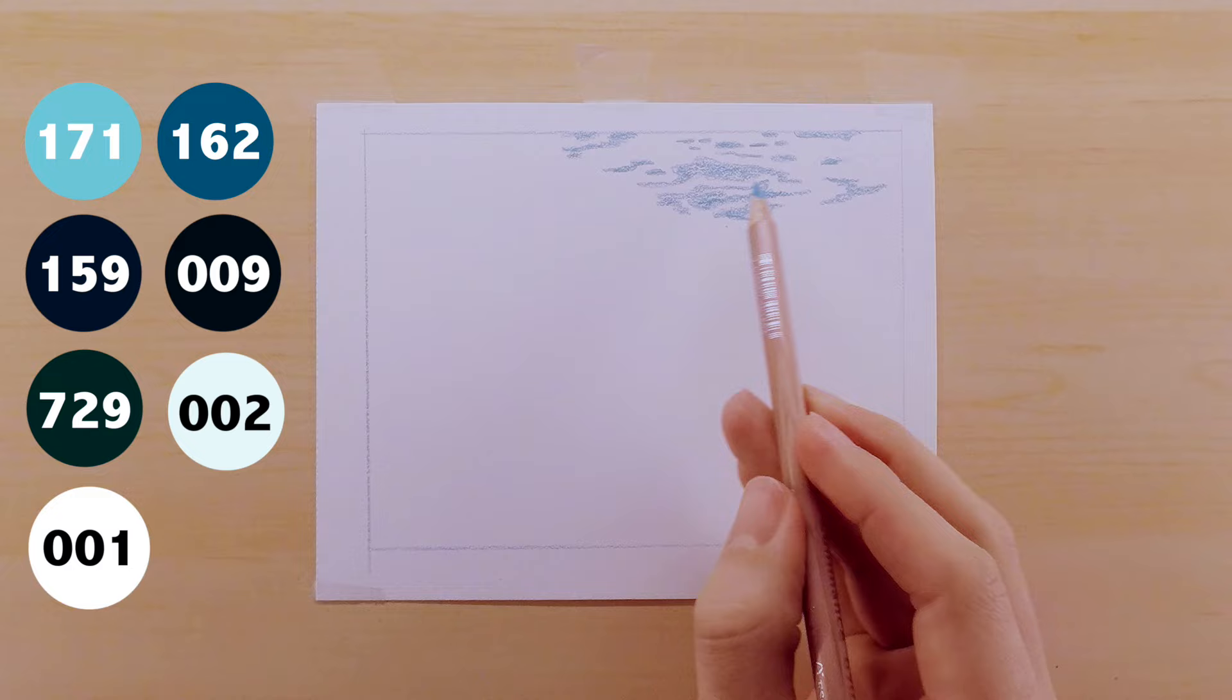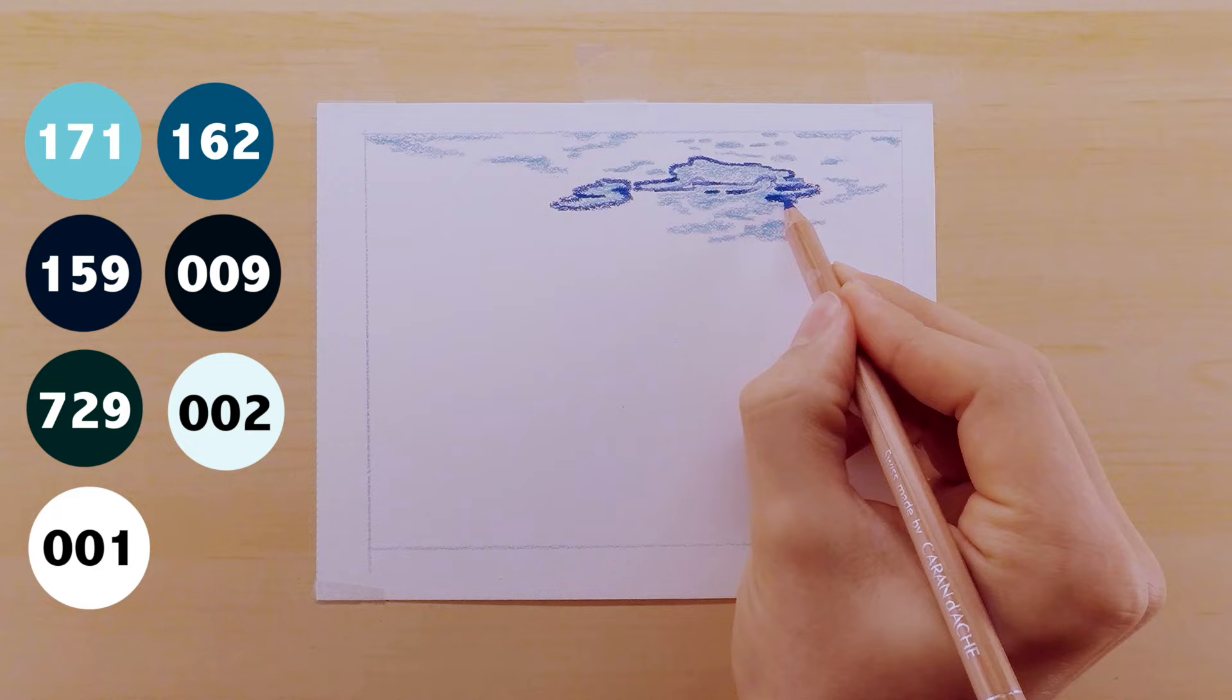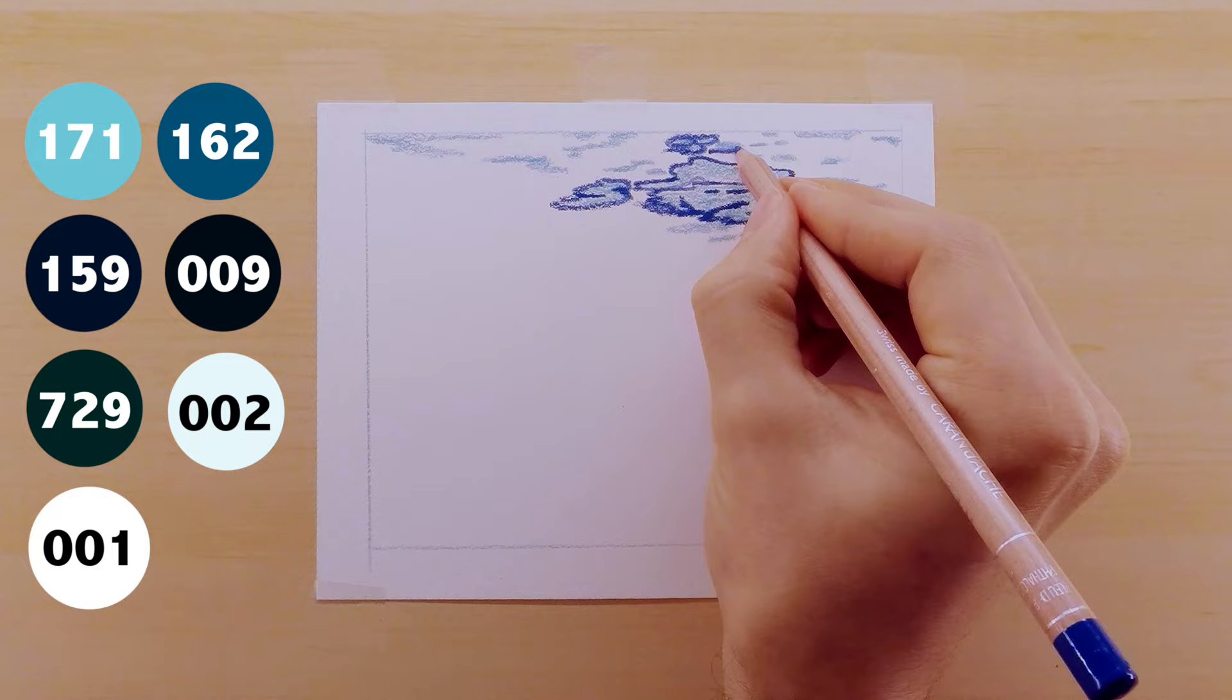The next thing I'm doing is I'm using my 162 pencil to outline those blobs just to really create a nice contrast between the dark part of the water and the highlighted top part of the water.